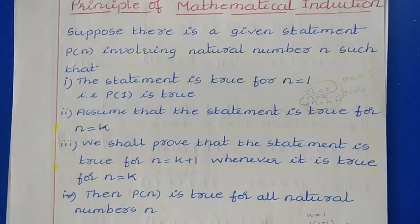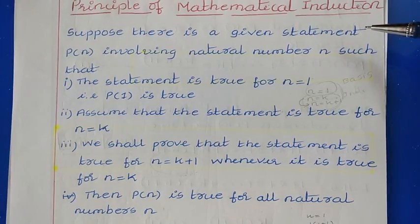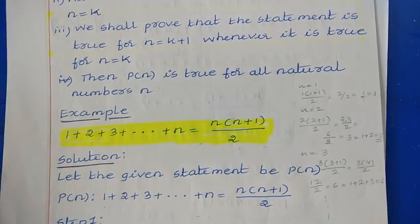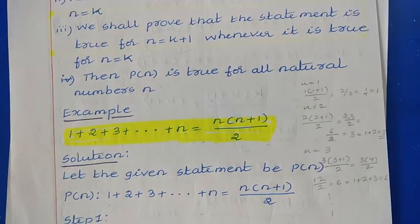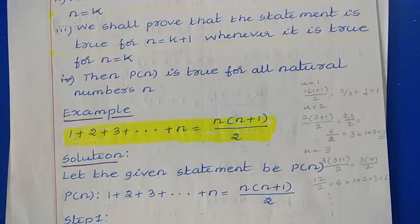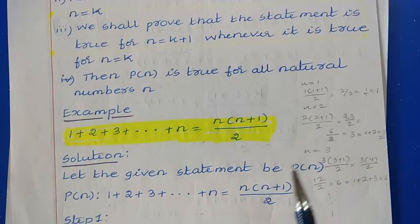Let us understand this method clearly by applying it to this example. The mathematical statement gives the sum of n natural numbers: 1 plus 2 plus 3 plus so on up to n equals n into n plus 1 divided by 2. We call this statement p of n. The first step of the principle of mathematical induction is to check the given statement for n equal to 1.